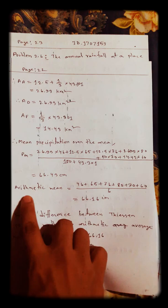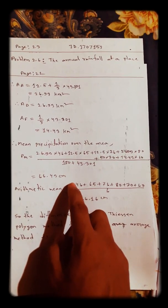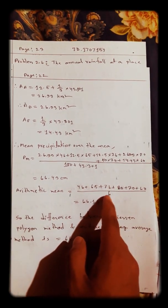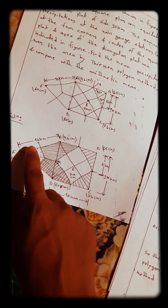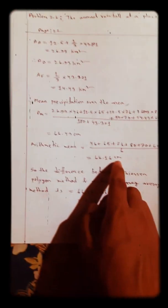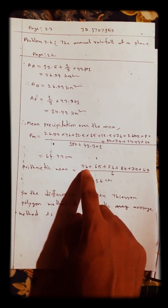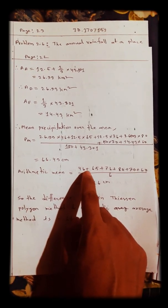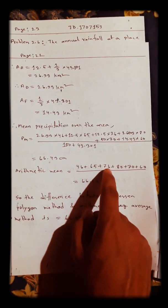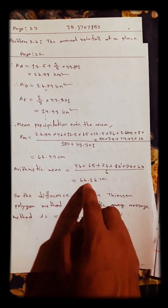For the arithmetic mean, precipitation equals the summation of precipitation divided by the number of stations. We have six stations — A, B, C, D, E, F — so n = 6. The precipitation values are: A = 46, B = 65, C = 76, D = 80, E = 70, F = 60 centimeters. The arithmetic mean is 66.16 centimeters.